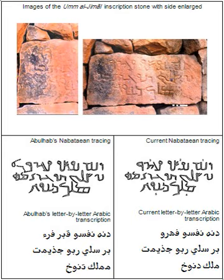Numerals in Nabataean script were built from characters of 1, 2, 3, 4, 5, 10, 20, and 100.